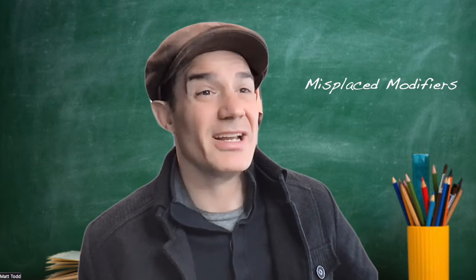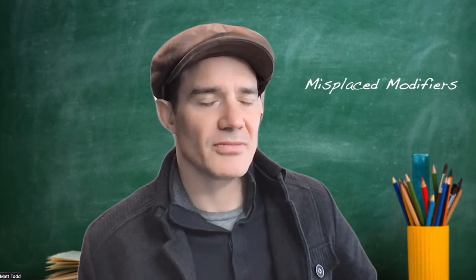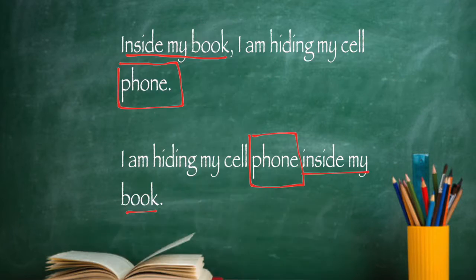You're hiding in your book? Well, the most important part of me, my cell phone. You ding-dong. Look, what you said is, inside my book, I'm hiding my cell phone. But what that sounds like is that you're hiding your book. This is called a misplaced modifier.